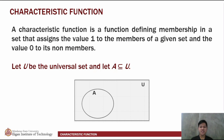A characteristic function is a function defining membership in a set that assigns the value 1 to the members of a given set and the value 0 to its non-members. So for us to fully understand the definition, let us look at the example below. Let U be the universal set and let A be a subset of U. As we can recall from our previous discussion on sets, we were taught how to represent sets by a diagram, and this illustration right here is an example of it.